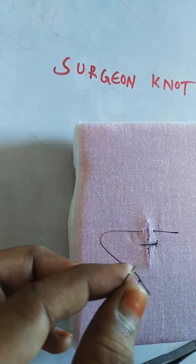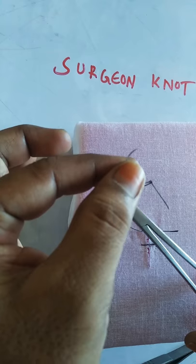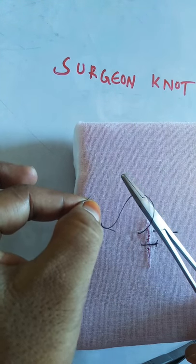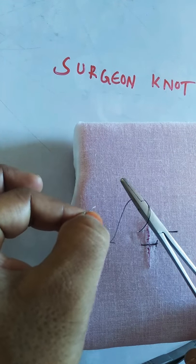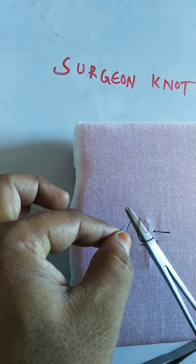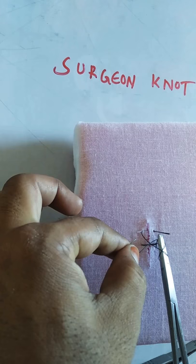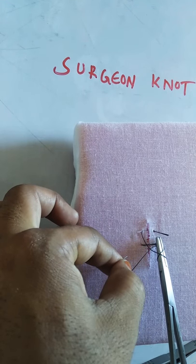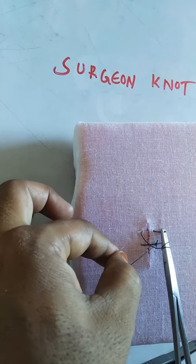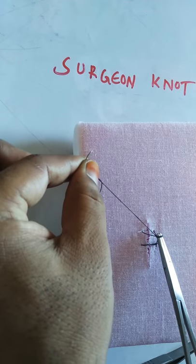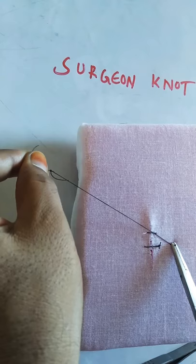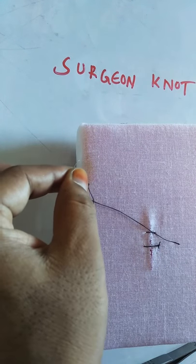In the surgeon's knot, you should make two throws. This is one throw of the suture material around the needle holder in the clockwise direction, and there is a second throw. You have to make two throws of the suture material around the needle holder in the clockwise direction, then open the needle holder, grab the small end, and make the knot. This is your first tie.